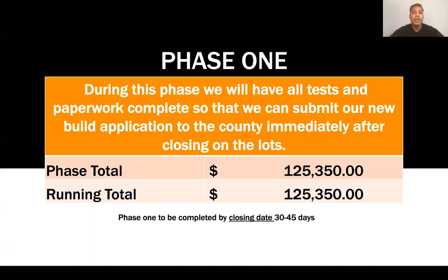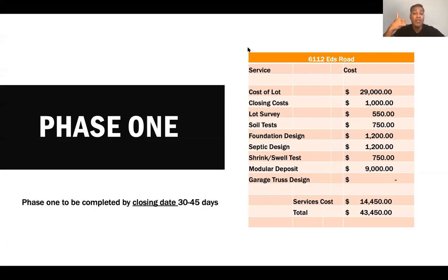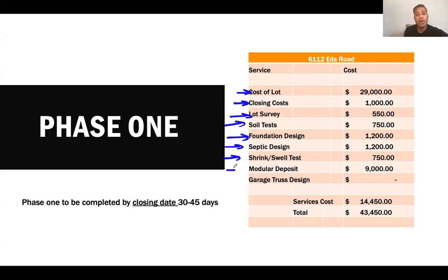Let's talk about phase one. During this phase, we will have all tests and paperwork completed so that we can submit our new build application to the county immediately after closing on the lots. Typically, we're using our own money to get past phase one. So this is phase one for 612 Eads Road. We have our cost of purchasing the lot, closing costs, a lot survey, a soil test, foundation and design, septic design, the shrink-and-swell test — that's something that happens with the soil — and the deposit for our home.